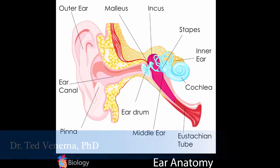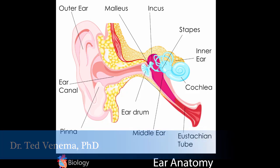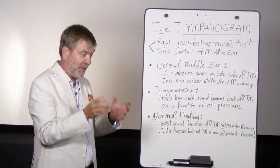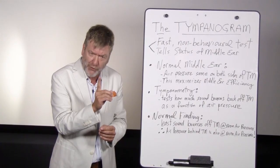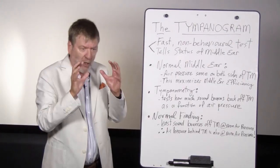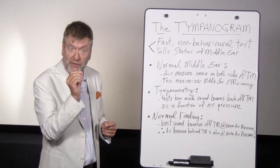The main assumption behind tympanometry is that the normal middle ear has air pressure that's even on both sides of the tympanic membrane. This is a key underlying assumption. When the air pressure is even on both sides of the eardrum, the middle ear is most efficient at passing sounds through it. When the air pressure is uneven on both sides — Houston, we've got a problem — and this yields a conductive hearing loss.